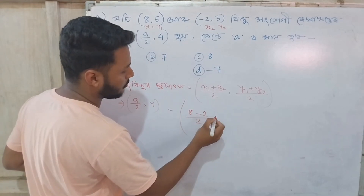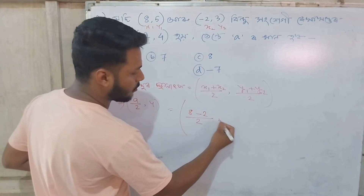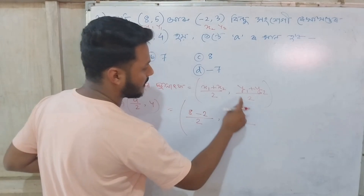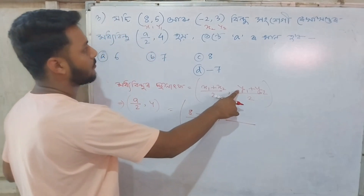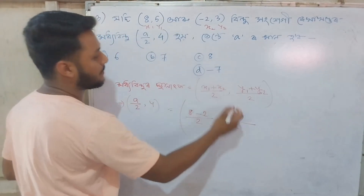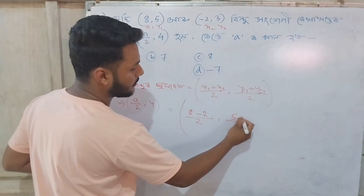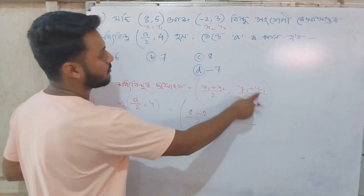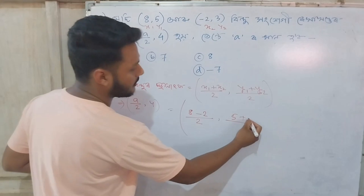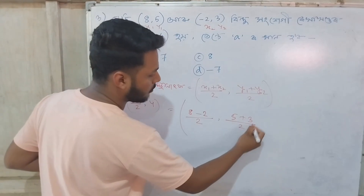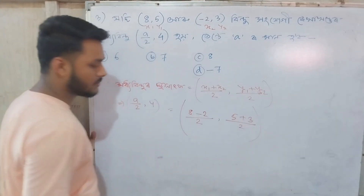So when y1 equals 5 plus y2 equals 3, divided by 2...